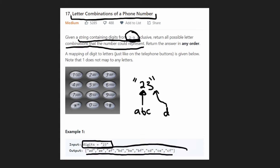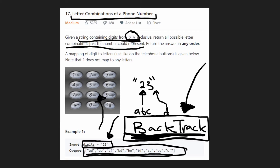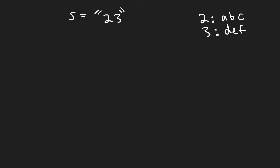This is a backtracking problem because we're forced to brute force it — we have to find every single combination we could get using the given digits. Backtracking is a very important algorithm. Let me show you the drawing of the backtracking solution.